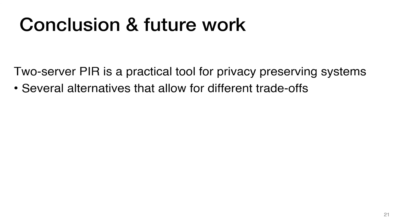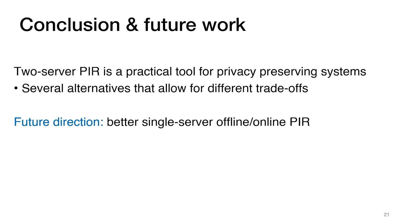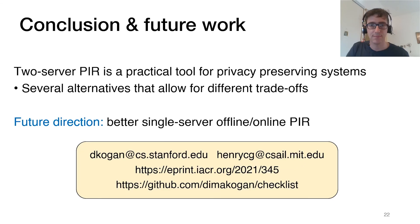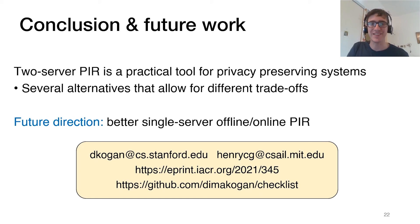In conclusion, one high-level message is that two-server PIR is a valuable tool in the design of practical privacy-preserving systems, and there are several alternative protocols, each offering a different trade-off between various efficiency metrics. An interesting future direction is to come up with better offline-online PIR schemes in the single-server setting — in our previous work we gave one such protocol, but there is a lot of room for efficiency improvement. If you have any questions, please feel free to reach out to either Henry or me, and for more information, please check out our paper on ePrint or our code on GitHub. Thank you very much.